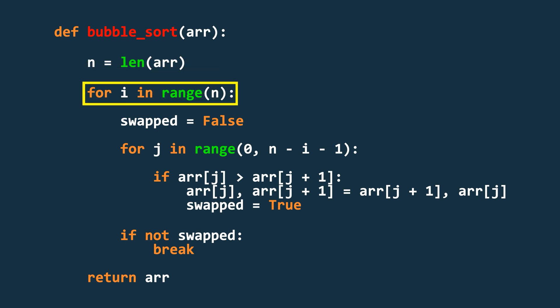We then run a loop for n iterations. Inside this loop, we create a variable called swapped and initially set it to false. This variable keeps track of whether any swapping occurred during the current pass.